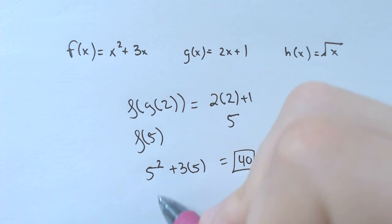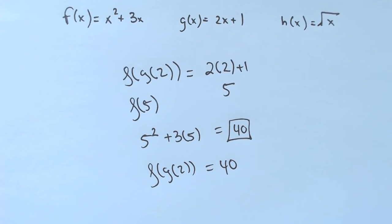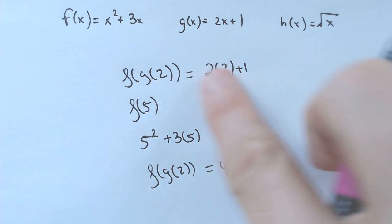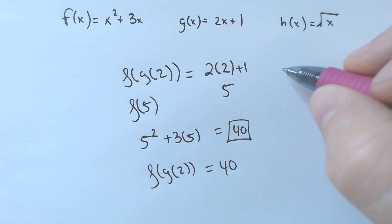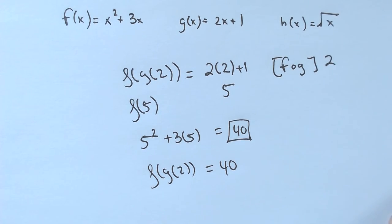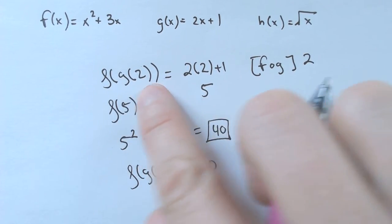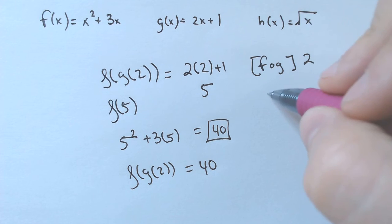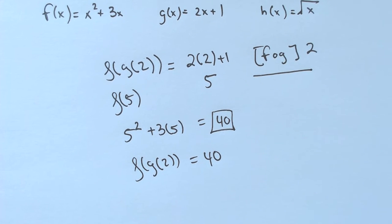So that means this whole thing, this f of g of 2, is equal to 40. And there are a few different ways you could write it. You could write it this way, but it also could have been giving you the exact same problem, f of g of 2. I kind of like this first way better, but this is the exact same problem.